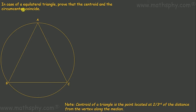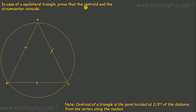This question says: in case of an equilateral triangle, prove that the centroid and the circumcenter coincide. We have this equilateral triangle inscribed into a circle. Since it is an equilateral triangle, all sides are equal. We have to prove that the centroid and the circumcenter are the same point.